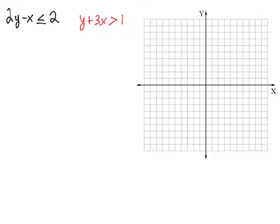So to graph each line, what you want to do is put each line into slope-intercept form. So for the first one, 2y minus x less than or equal to 2, I want to put that into y equals mx plus b form. So add x to both sides,